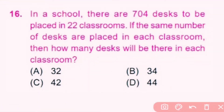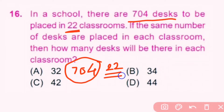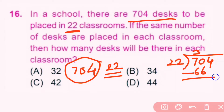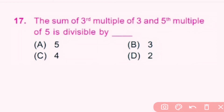Let's start with question number 16. In a school there are 704 desks to be placed in 22 classrooms. If the same number of desks are placed in each classroom, then how many desks will be there in each classroom? Total desks are 704 and there are 22 classrooms. We divide 704 by 22: 22 threes are 66, remainder 4; then 22 twos are 44. So there will be 32 desks in each classroom. A is correct.